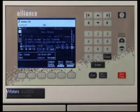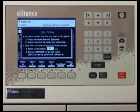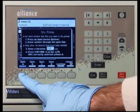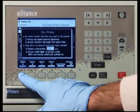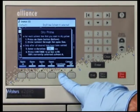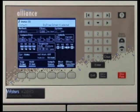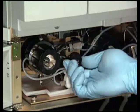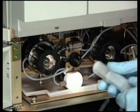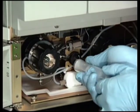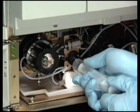The Dry Prime dialog box appears. Press the screen key corresponding to the solvent line you want to prime. Then press Continue. Next, open the vent valve and insert the priming syringe. Withdraw the syringe plunger to pull solvent through the tubing.